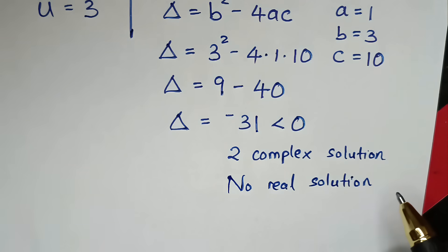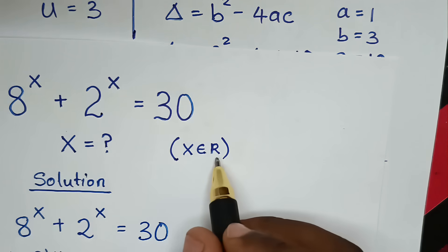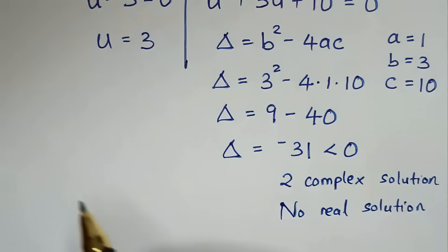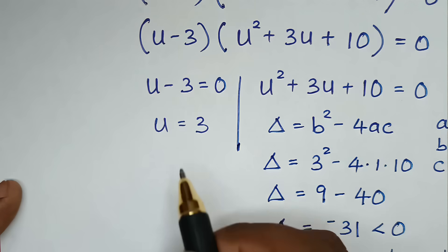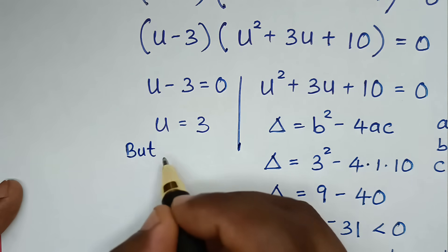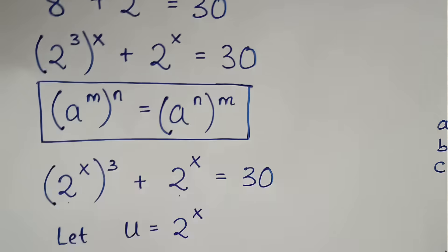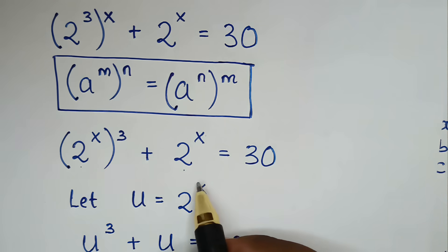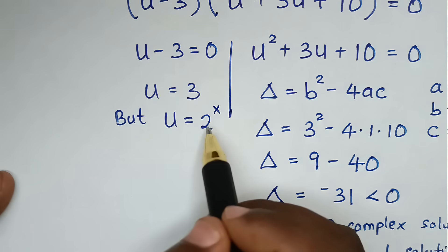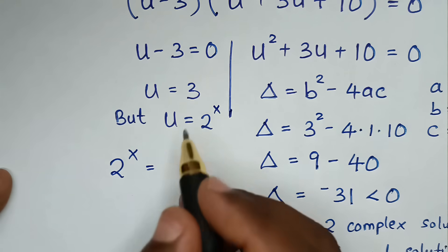Since there is no real solution from the quadratic, and the condition requires x to be a real number, we reject this second solution. Continuing with u = 3, and recalling that u = 2^x, we get 2^x = 3.